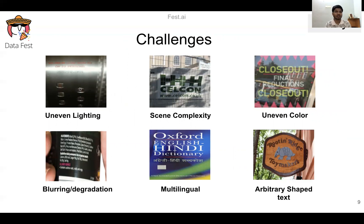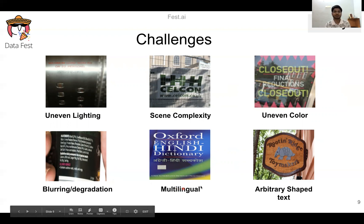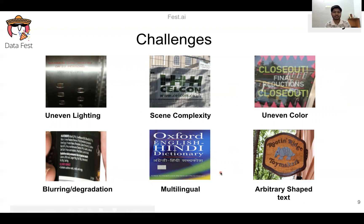The challenges in text detection include: first, uneven lighting, where reflections of light make it very difficult to detect and segment text regions. Second, scene complexity, where shadows from sunlight make text detection very challenging. Third, uneven color. Fourth, blurring and degradation caused by recapturing of images or aging of documents. Fifth, multilinguality — where many types of languages with different fonts are present in a single image, which is very challenging.